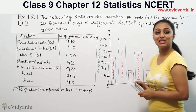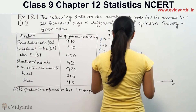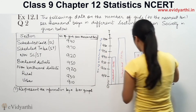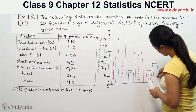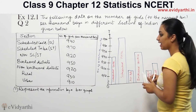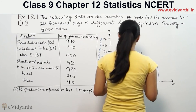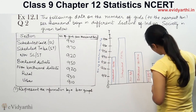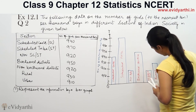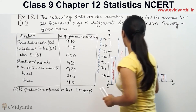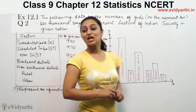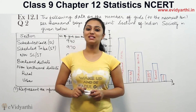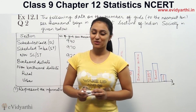Then rural is 930, so the bar is at 930. This is rural. Then urban is 910, and the bar is drawn at 910. This is urban. So that completes question 2 from exercise 14.3. Do watch the next video for more questions. Goodbye.